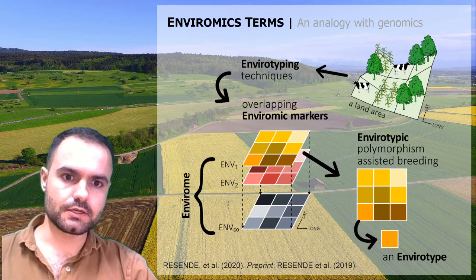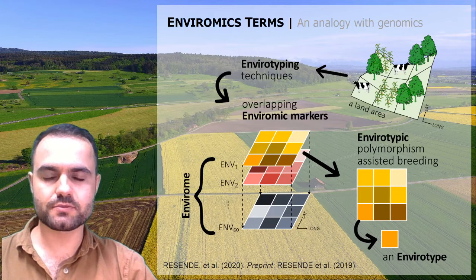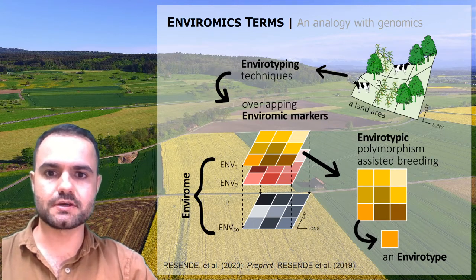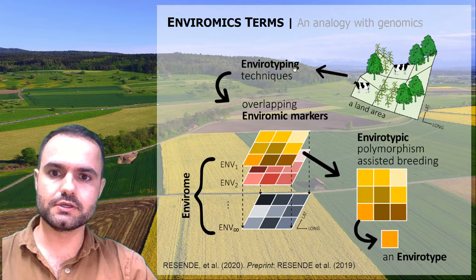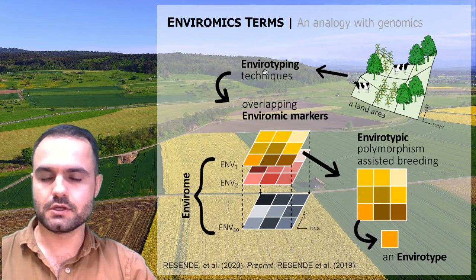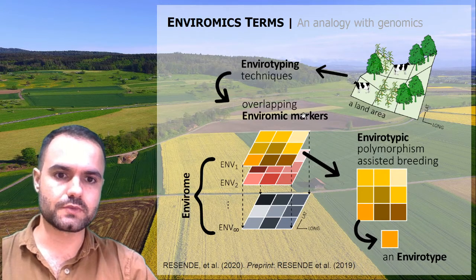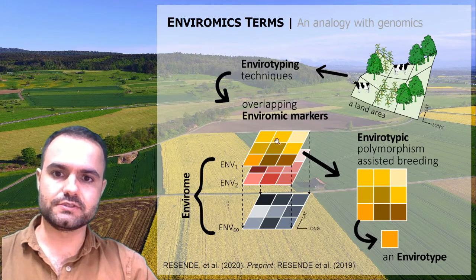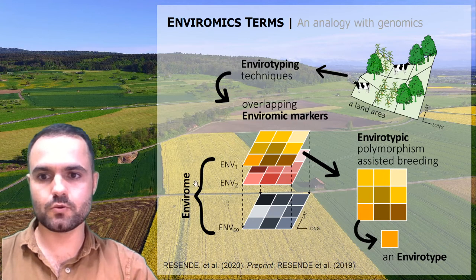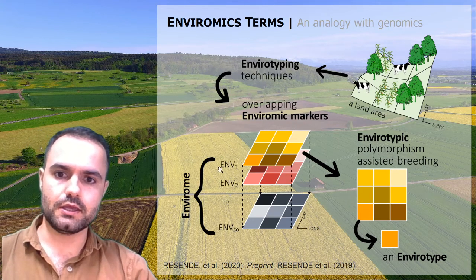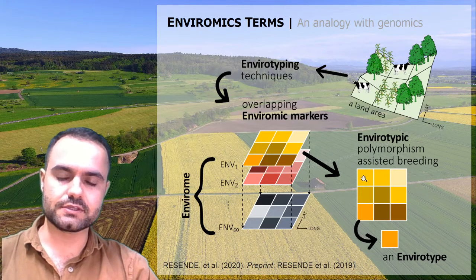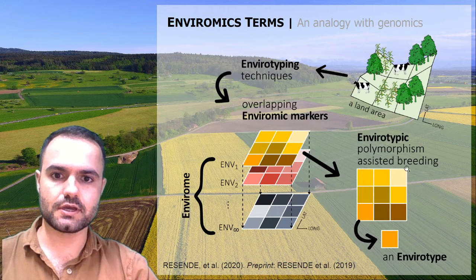Let's begin by introducing some enviromics terms. We have a landscape with pixels, and from this landscape we collect enviromics markers — environmental markers — through envirotyping. The set of these environmental variables forms the envirom, and at the level of a single enviromic marker we have envirotypic polymorphism.